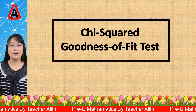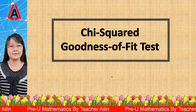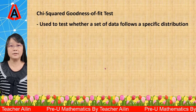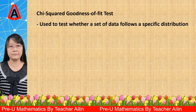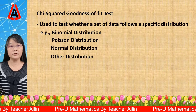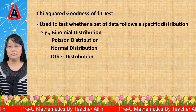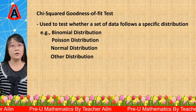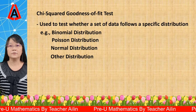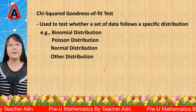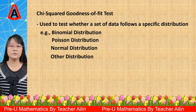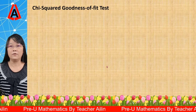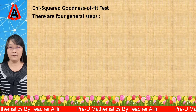In this video, I'm going to talk about the Chi-squared Goodness of Fit Test. The Chi-squared Goodness of Fit Test is used to test whether a set of data follows a specific distribution — for example, binomial distribution, Poisson distribution, normal distribution, or some other distribution. I'm going to show you how to use the Goodness of Fit Test to test whether a set of data follows a binomial distribution. For Poisson and normal distribution, that will be in the next video. For the Goodness of Fit Test, generally, there are 4 steps.